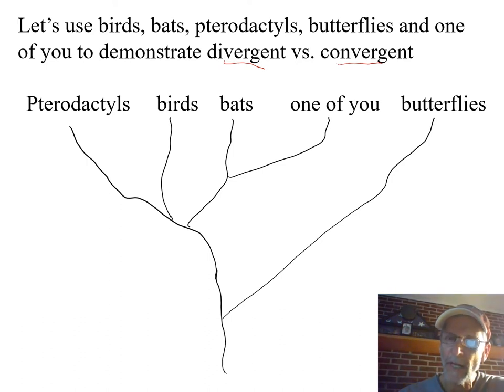As an example of that, I'm going to use the same organisms in the same little phylogeny tree, showing their relatedness, to describe both. Because depending on how you explain it, and especially where you start your explanation, these same animals can be examples of divergent or convergent evolution.